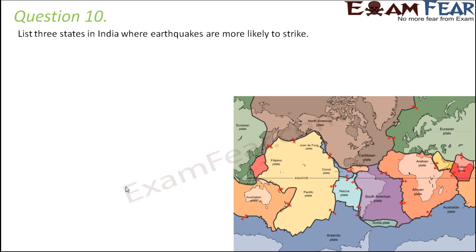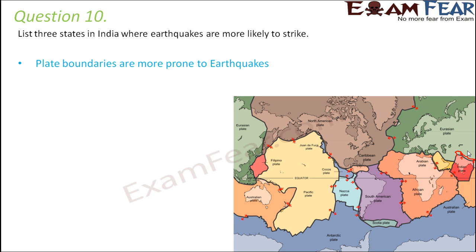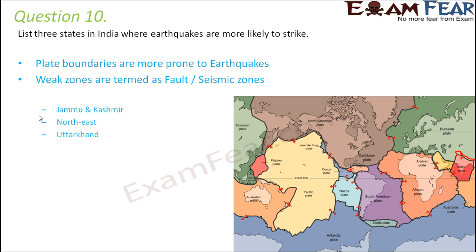Question number 10: List three states in India where earthquakes are more likely to strike. Looking at the map of India, the northern and northeastern states are most impacted by plate boundaries. Plate boundaries are more prone to earthquakes because they suffer the most during collision between plates — specifically here between the Indian plate and the Eurasian plate. Some of the weak zones are Jammu and Kashmir, the northeast, and Uttarakhand.